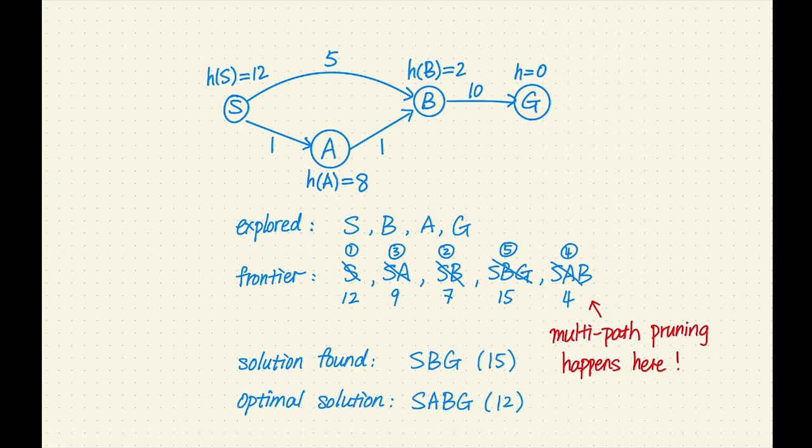This example shows you that A-star search with multi-path pruning may return a suboptimal solution first. Let's reflect on this example. What went wrong? After expanding S, we chose to expand B before expanding A since S-B has a smaller F value. This causes us to find the top path to B first, but this is a longer path to B. Later on, when we found the shorter path to B through A, we had to discard it due to multi-path pruning.